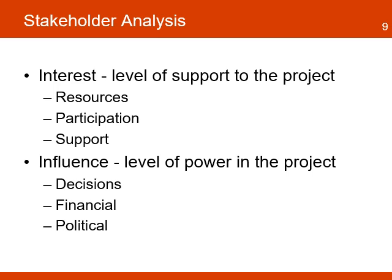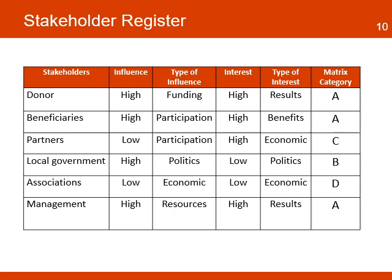This information will help categorize each stakeholder and define the type of strategy to use with each group. The stakeholder matrix is a simple tool used to organize basic information about the stakeholders. It is used during the design phase, but should be reviewed during the planning and implementation phases. The first column lists the stakeholders identified in the previous step. The next two columns quantify the levels of influence the stakeholder may have on the project, and the following two columns quantify the levels of interest, using values of high and low, with the type of interest also identified. The last column categorizes each stakeholder based on levels of interest and influence. In the next slide, a simple 4x4 matrix is used to identify the categories of each stakeholder.